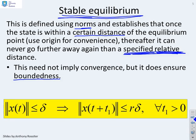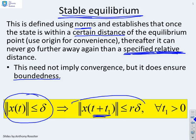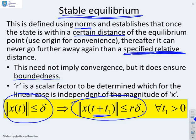Here's a mathematical expression. What we've said is if x of t is within delta of a particular point — using the origin for convenience — so if the norm of x of t is less than delta, then for all future times t plus t1, the norm of x of t must remain within r delta. Now, r is a scalar factor to be determined. For linear systems, this r is actually independent of the magnitude of x, but for non-linear systems the relationships are somewhat more complicated.